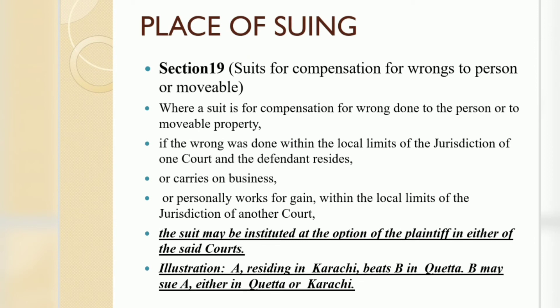Section 19 covers suits for compensation for wrongs to a person or movable property. Section 19 and section 20 deal with movable property or personal wrongs — if a person has been wronged, beaten, defamed, or subjected to assault or battery, then the suit can be instituted in three places: first, where the cause of action arose; second, where the defendant resides; and third, where the defendant carries on business or personally works for gain.